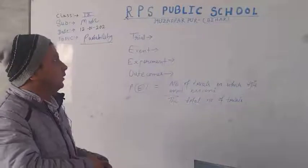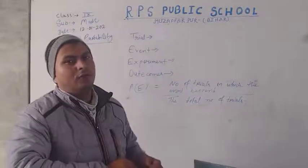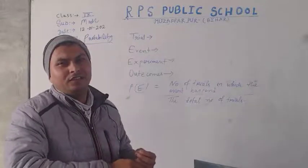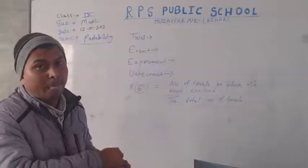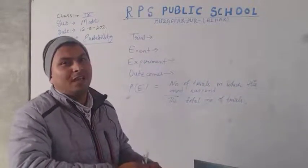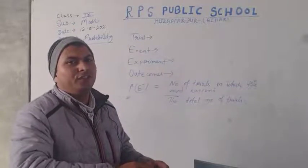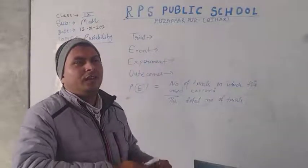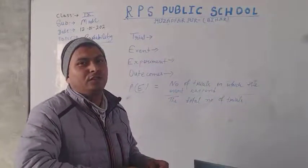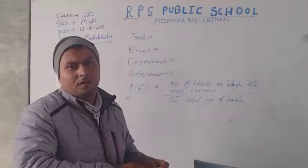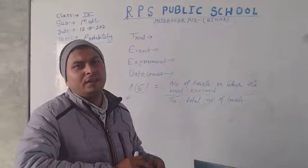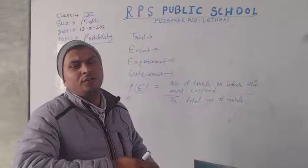First of all, let us think about what probability is. When we start to study probability, everybody thinks about what it is. Let us look at some examples from our daily life. As someone says it may rain today — how can they say that? It depends on weather conditions. If anyone has knowledge of weather, they can predict it may rain today or it may not rain today.